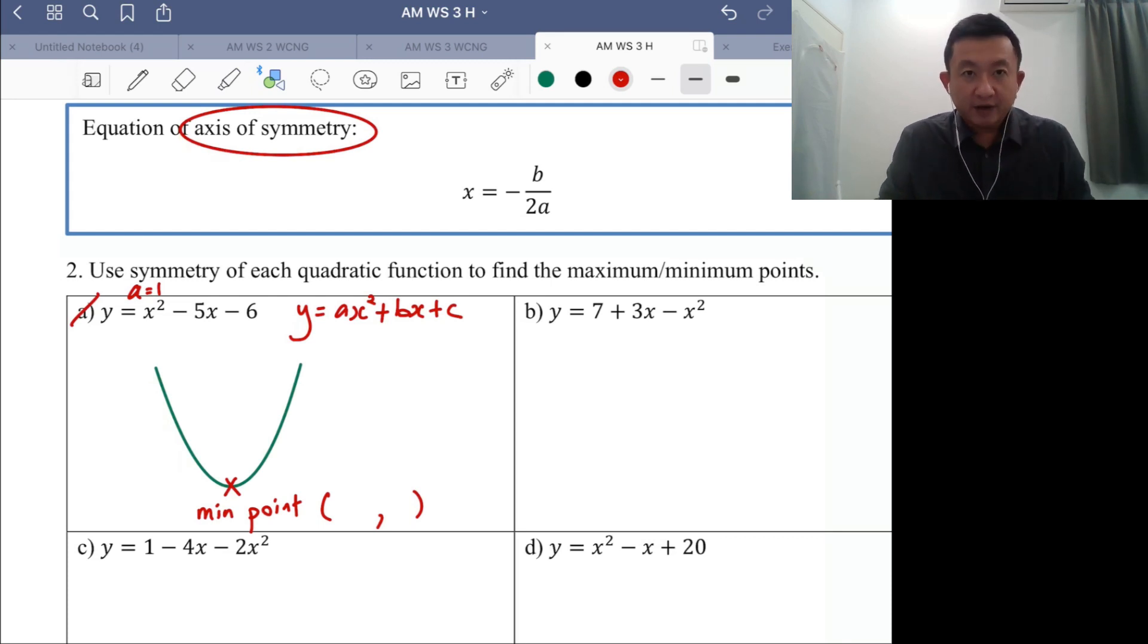The idea of symmetry is when you draw a vertical or horizontal or diagonal line, it will split your shape into two equal halves, two identical shapes. So in this case you have a u-shape. How do we split this into two equal parts?